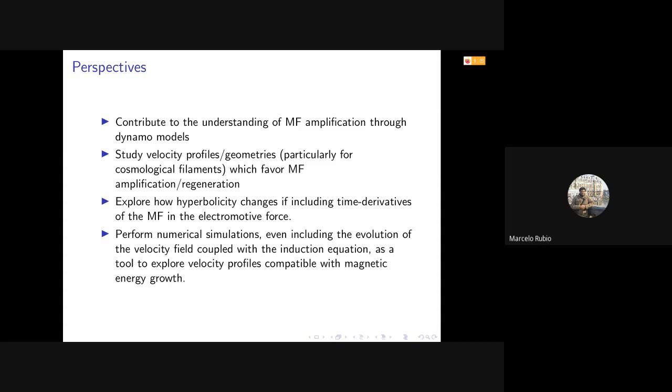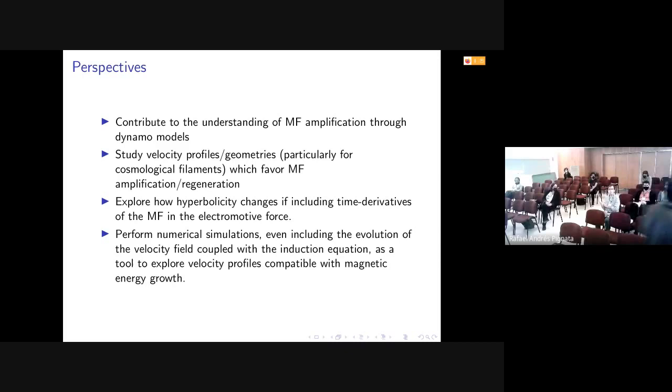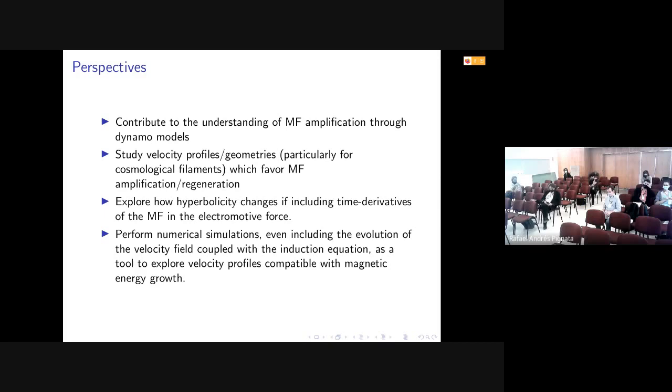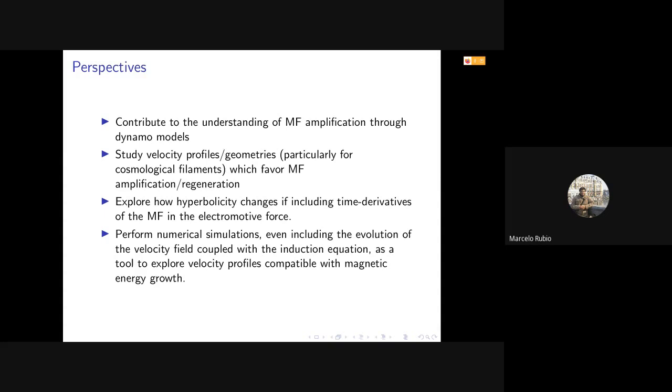Marcelo, thank you for the talk. The question is: do you have, or is there, any realistic constraint in the three parameters of your higher-order electromagnetic theory from laboratory observations? Well, yes, there is a nice review by Widrow in which they consider some restrictions, for example, for this alpha or beta parameter. It depends on the model and on the scales you are going to work, but yes, there are.